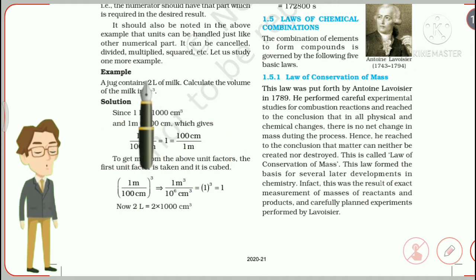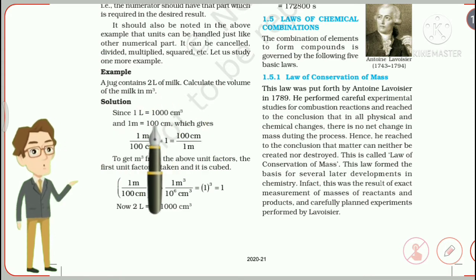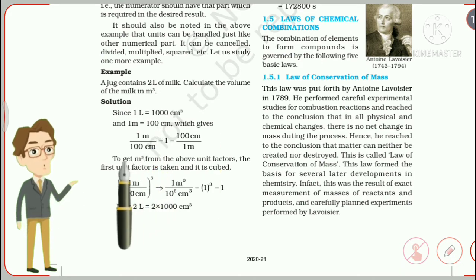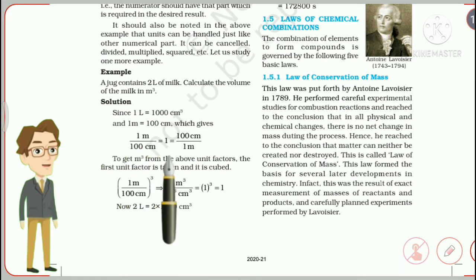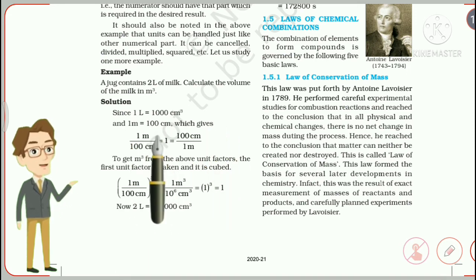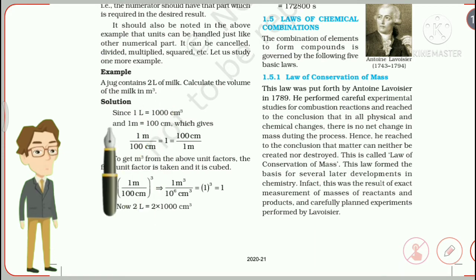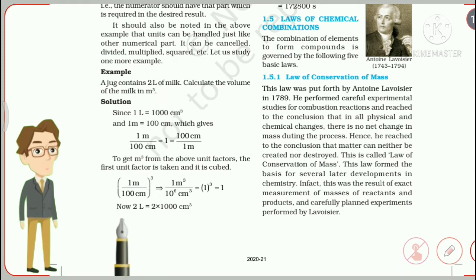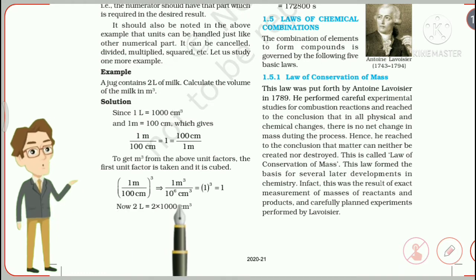There is no direct conversion from liters to meter cubed, so we go via centimeters cubed. We know 1 liter = 1000 cm³, and 1 meter = 100 centimeters. Multiply both sides by 1: 1 m = 100 cm, giving two unit factors: (1 m / 100 cm) = 1 and (100 cm / 1 m) = 1. Since we want meter cubed, we cube the first equation: (1 m / 100 cm)³ = 1 m³ / 10⁶ cm³.